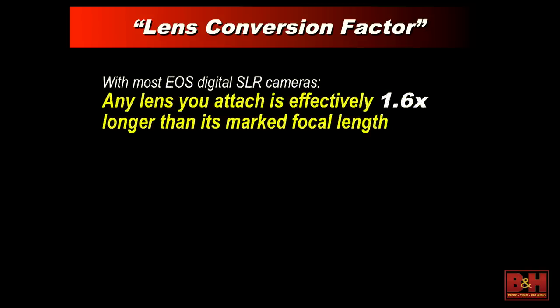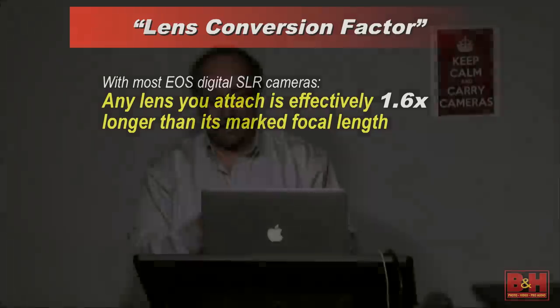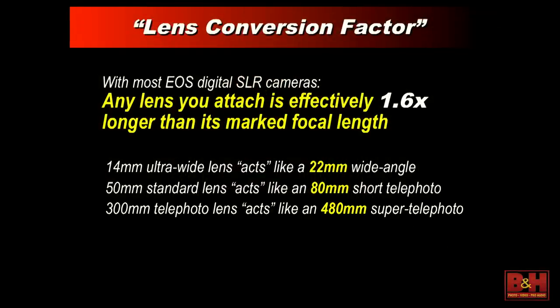This lens conversion factor is something you have to keep in mind if you shoot with a small sensor camera and you're thinking about what lenses to get. For any of Canon's APS-C cameras, the crop factor is 1.6 times. So a lens acts like it's 1.6 times longer than its marked focal length. That 14 millimeter acts like 22mm on a full frame; a 50mm standard lens acts like an 80mm short telephoto. The crop factor is actually a cool thing if you shoot telephoto — with no increase in size or weight, you get a more powerful telephoto effect on cameras like the 7D, Rebel, or 70D.